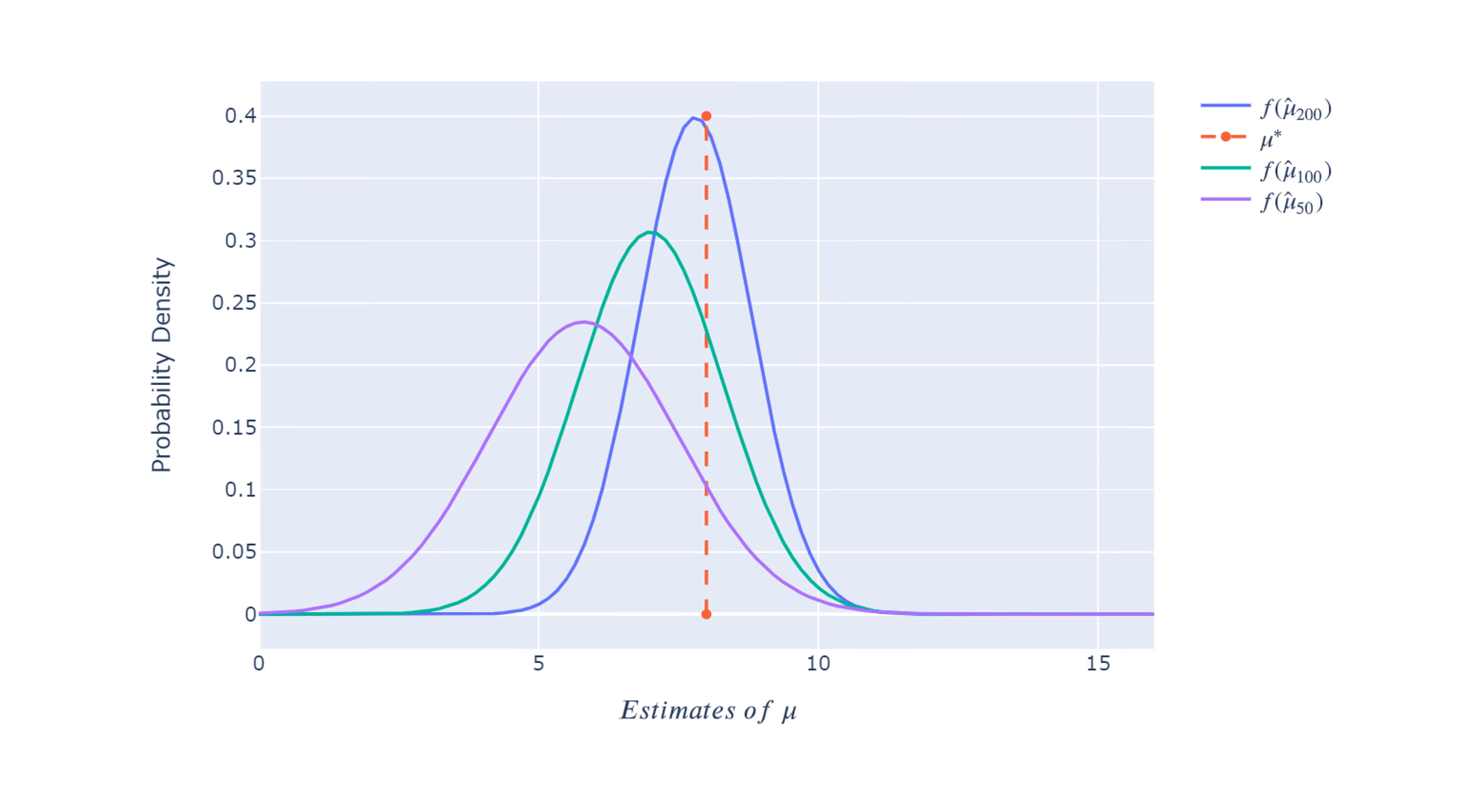It happens that for advanced estimators, the nice properties of unbiasedness and efficiency only can be derived for large sample size, not small sample size. That's why the study of asymptotic properties dominates econometrics.